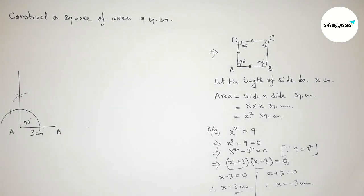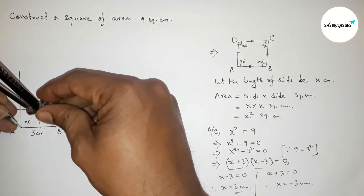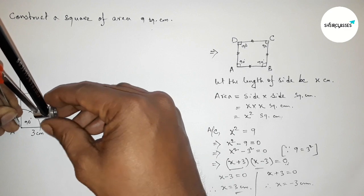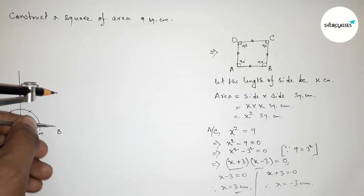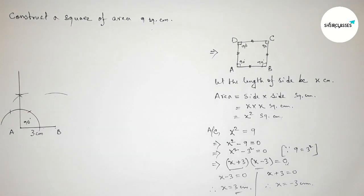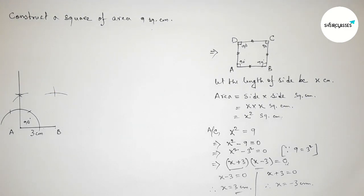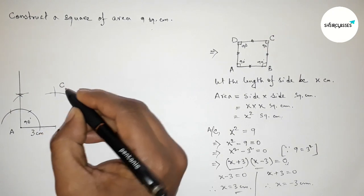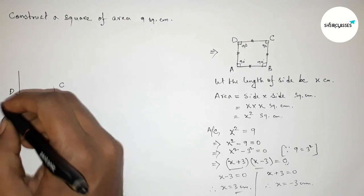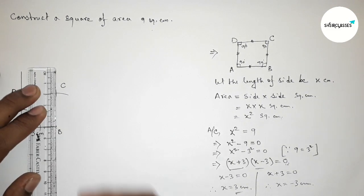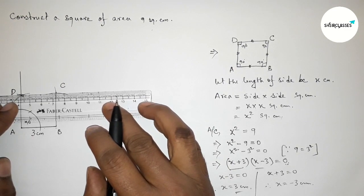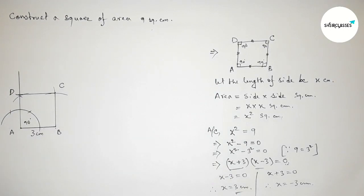Now taking length AB equals 3 centimeters with the compass, we cut an arc along the 90 degree direction from A to mark point D. Then putting the compass on point B and using the same length, we draw an arc to mark point C. We then join side BC and side CD to complete the square.